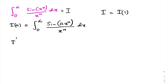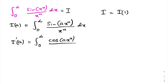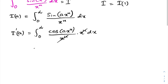Now I'm going to differentiate with respect to a. So I'(a) is equal to the integral from 0 to infinity of the derivative of the sine function, which gives cosine of (ax)^n, times x^n — multiplied by the coefficient of a, which is x^n — then divided by x^n dx. The x^n terms cancel, leaving the integral from 0 to infinity of cosine of (ax)^n dx.